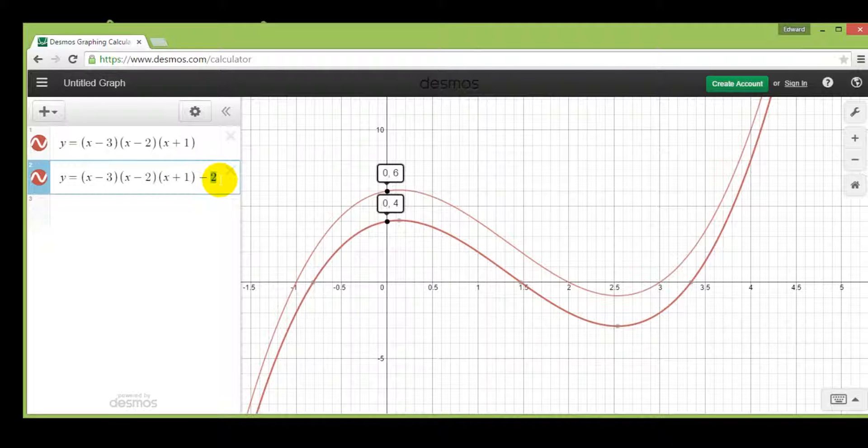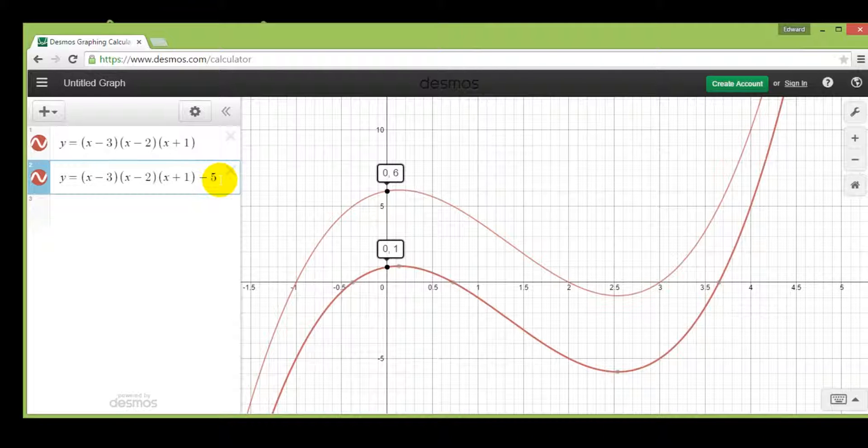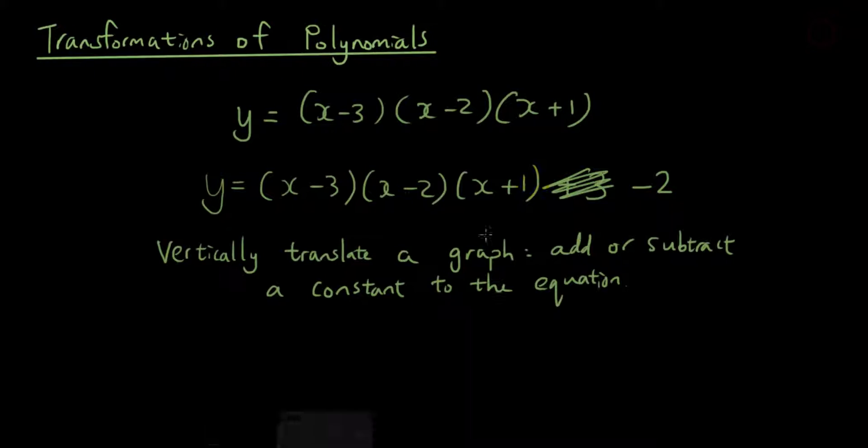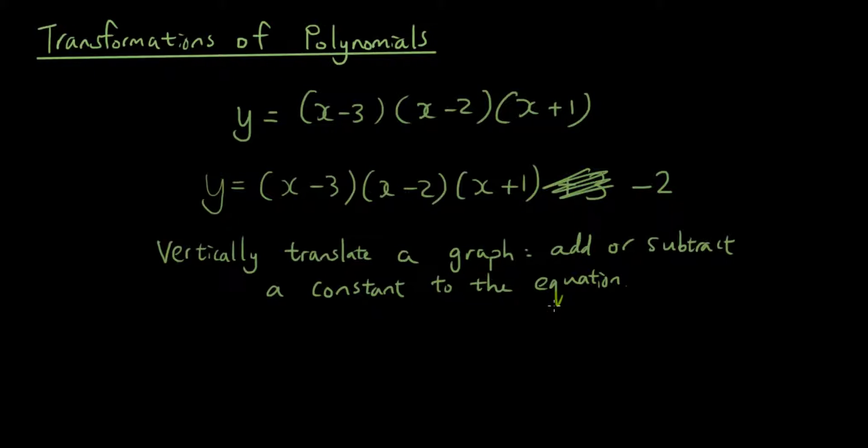If I do minus 5, it moves down 5 units. So that is vertical translation. Okay, add or subtract a constant to the equation.